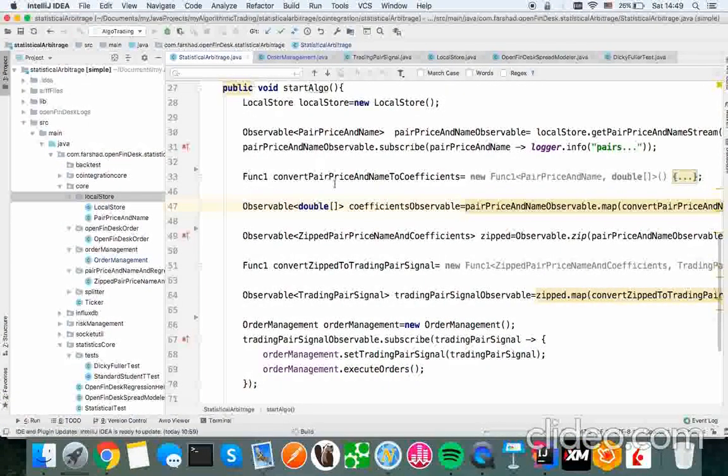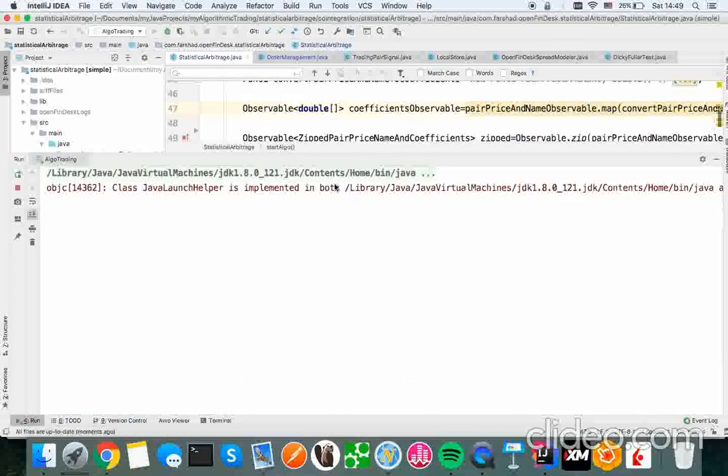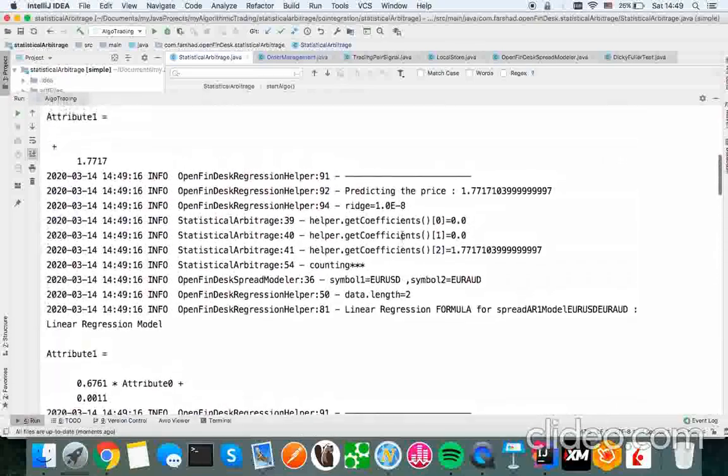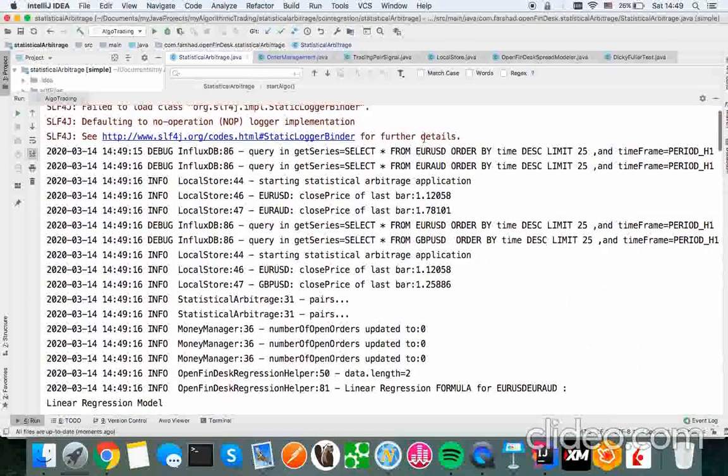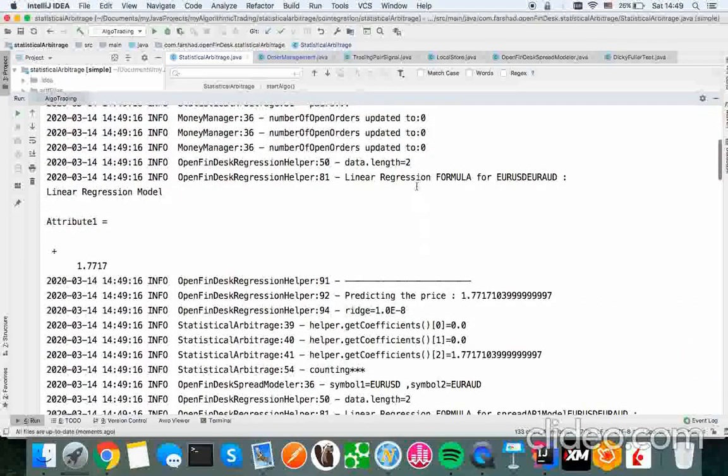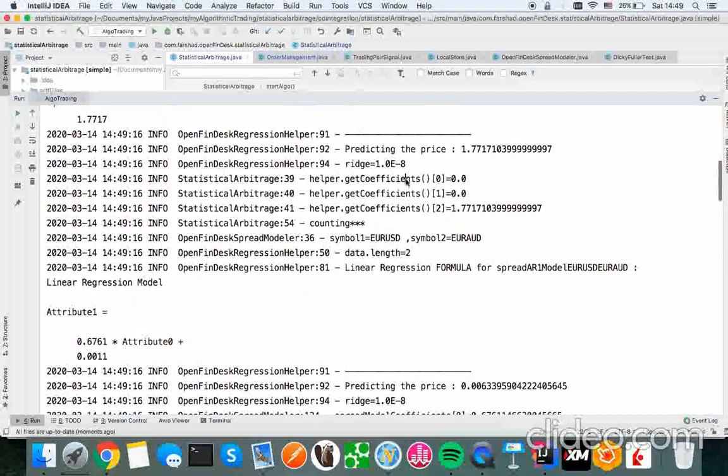So let's just run the code and see what happens. Okay. So we get EUR/USD and EUR/AUD. We find the linear regression. And then we find the spread of that.